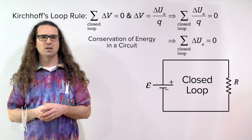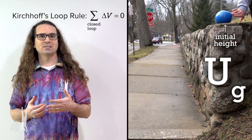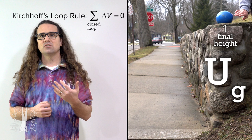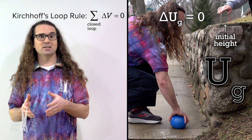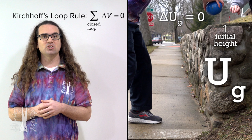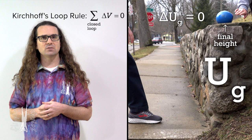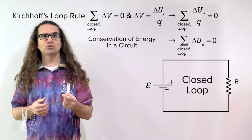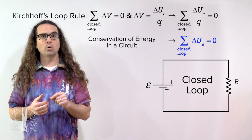Using a gravitational potential energy analogy, this is like saying if you drop a mass off of a wall, then pick up the mass and return it to its original location, the change in gravitational potential energy of that mass equals zero. We know this to be true because the mass returns back to the same height as where it started.